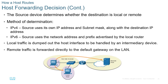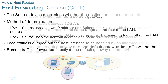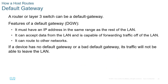Our router will receive the frame, examine it, strip it off, look at the packet, and make forwarding decisions. The source device determines whether the destination is local or remote by looking at the IP address and subnet to see if it shares the same network ID. If it's not part of the same network ID, it sends to the default gateway. A default gateway is a layer 3 device with a legitimate IP address in the same network range as your LAN. It accepts data frames from the LAN and makes forwarding decisions on which path to take to the remote host.